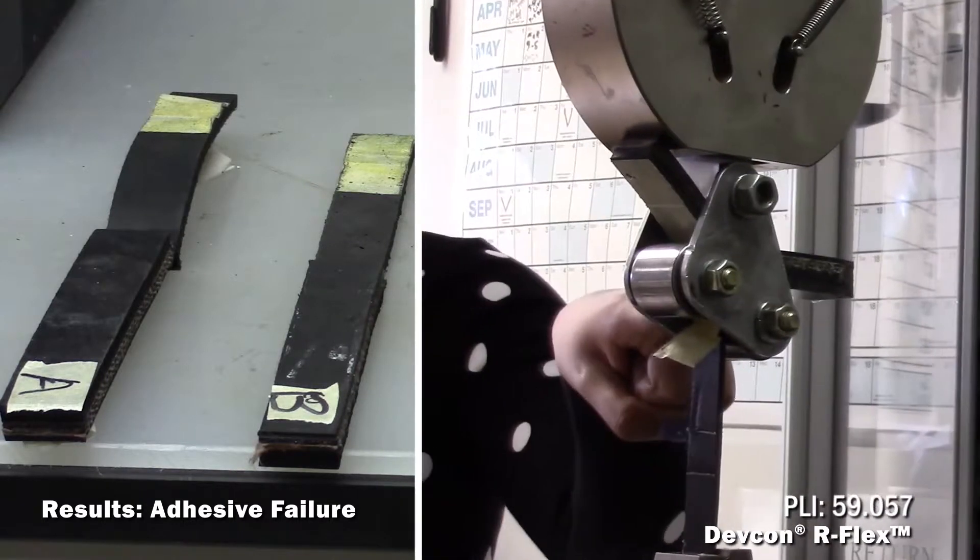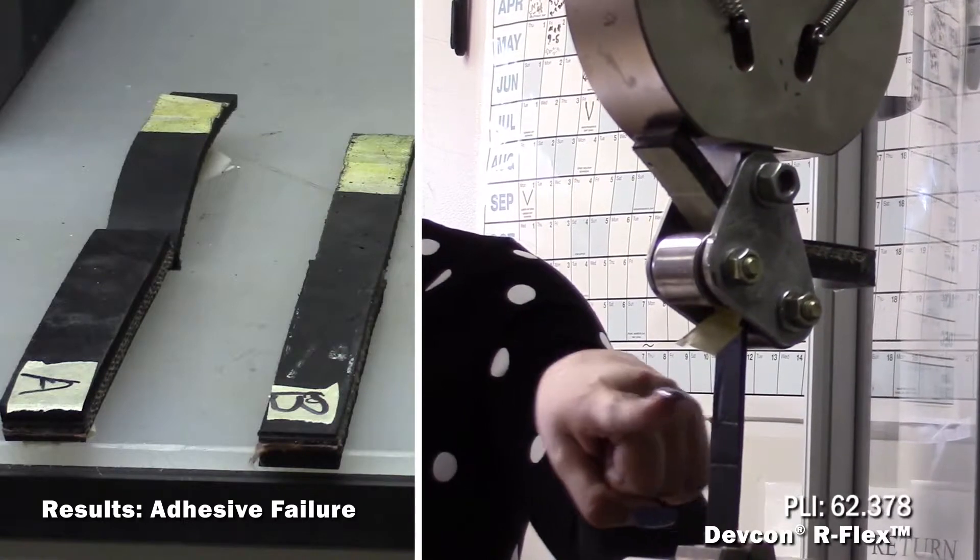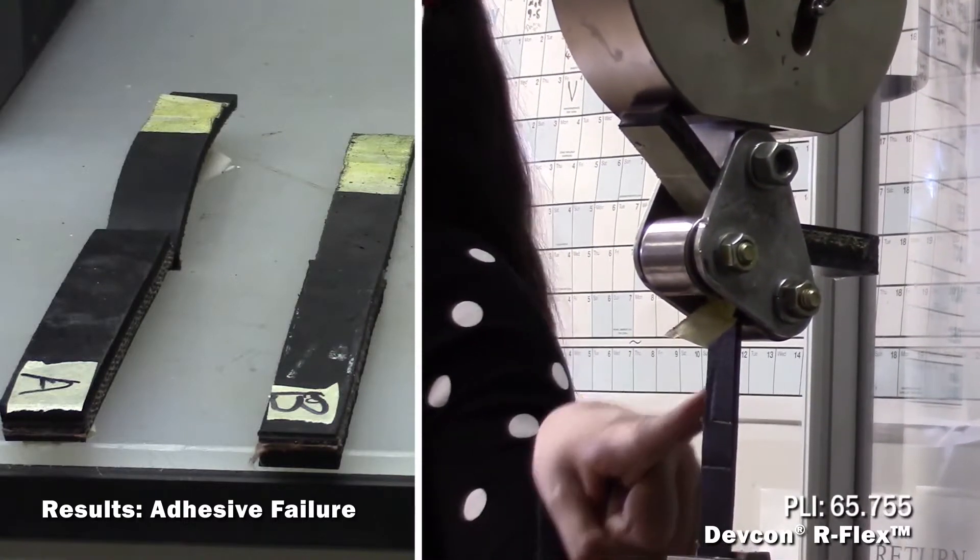The adhesive is pulling the rubber from itself. Instead of adhesive failure, we see surface pull of rubber.